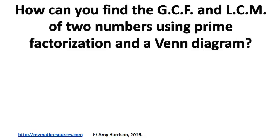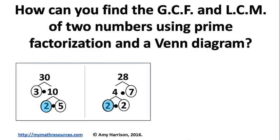How can you find the greatest common factor and the least common multiple of two numbers using prime factorization and a Venn diagram?